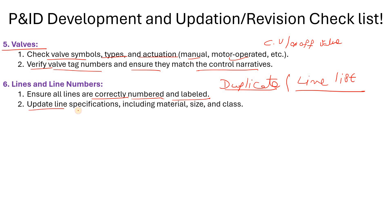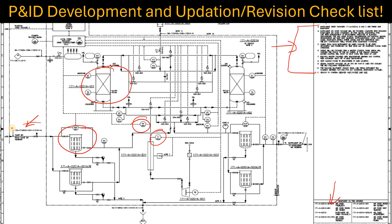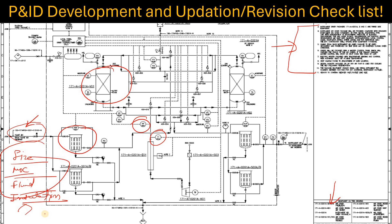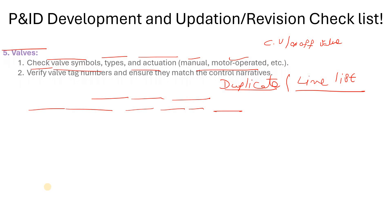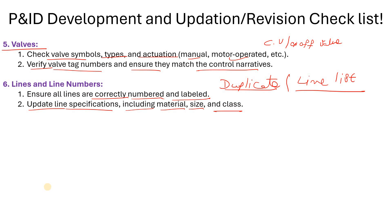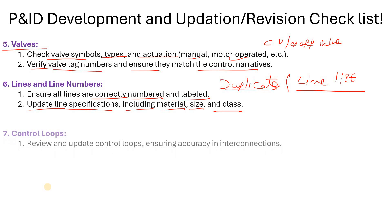Update your line specifications including materials, size, and class. In the line number you will find the size, class, MOC (material of construction), fluid, insulation specification, and insulation sizes. You must have an understanding of how to read the P&ID line number. If you have any difficulties with that, I have already prepared a video about it — you can check that out.